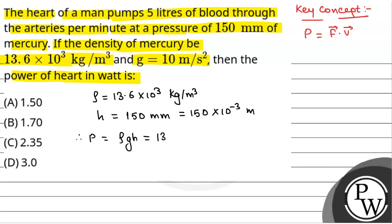So pressure will be 13.6 × 10³ into g, which is 10 meter per second square, into H which is 150 × 10⁻³. So this is the pressure. Now we know that force is equal to pressure into area, because pressure is equal to force by area. So force will be equal to pressure into area.